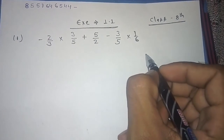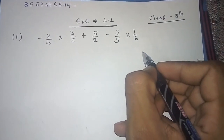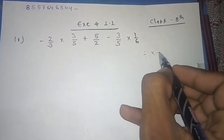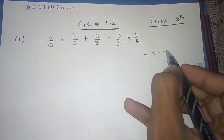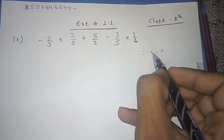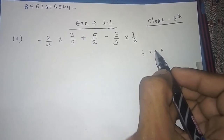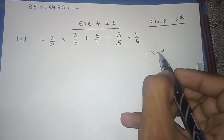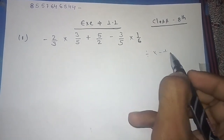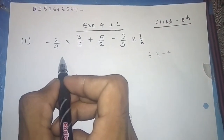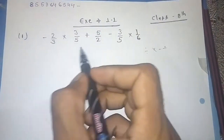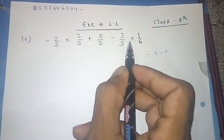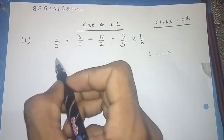In BODMAS, first we use division, then multiplication, then subtraction, then addition. In this problem there is no division, so we are going to choose multiplication first and solve the multiplication.